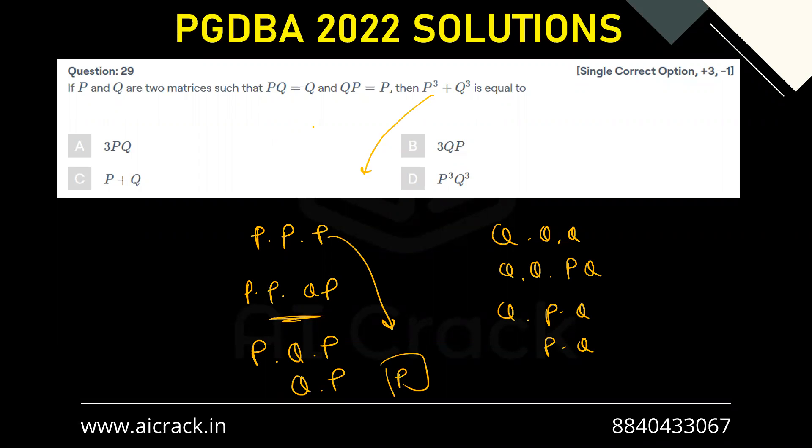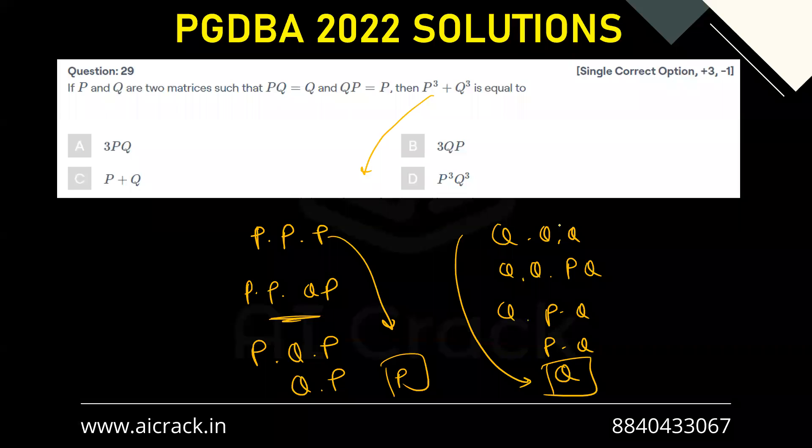And PQ can be written as Q. So this is also Q only. Q cubed is Q only. So the answer is P plus Q. So this is easy to get the answer.